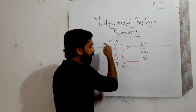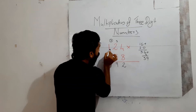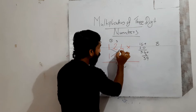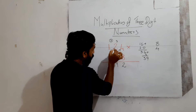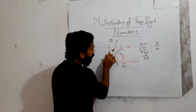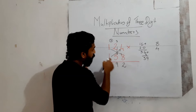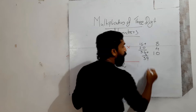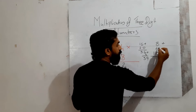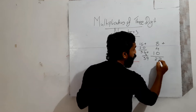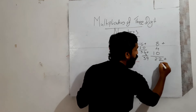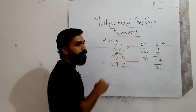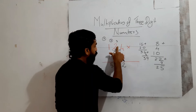Next cross multiplication: 1 into 8 is 8, 1 into 4 is 4, and the middle two digits 2 and 5 multiply to give 2 into 5 equals 10. Add these three numbers: 8 plus 4 plus 10 equals 22. Add the carry of 3: 22 plus 3 equals 25. Write 5 here, carry over 2.